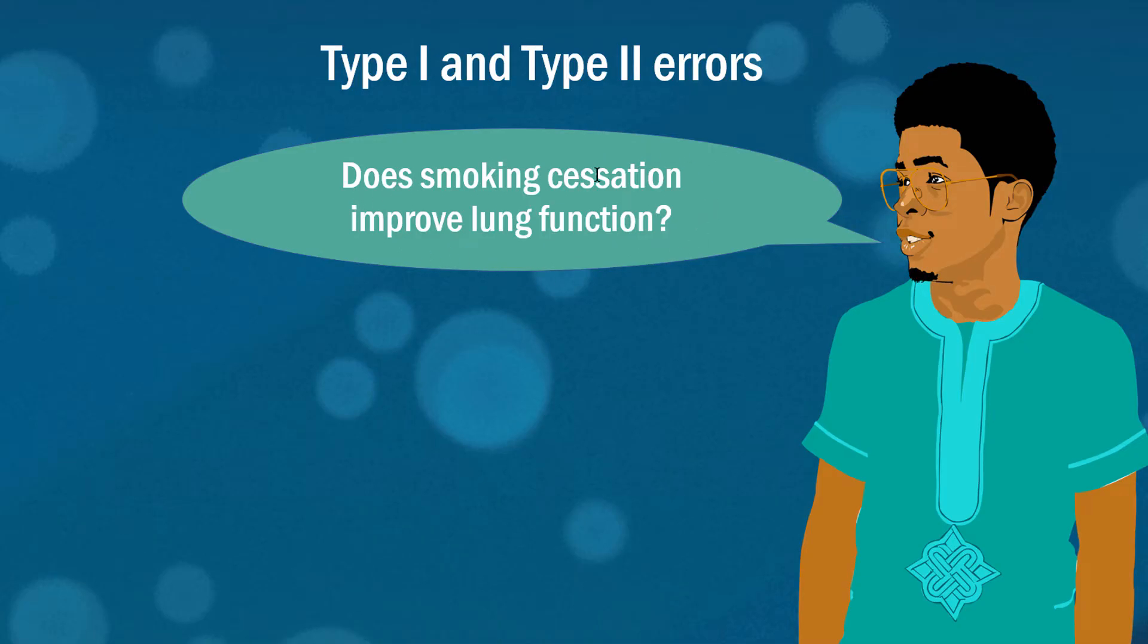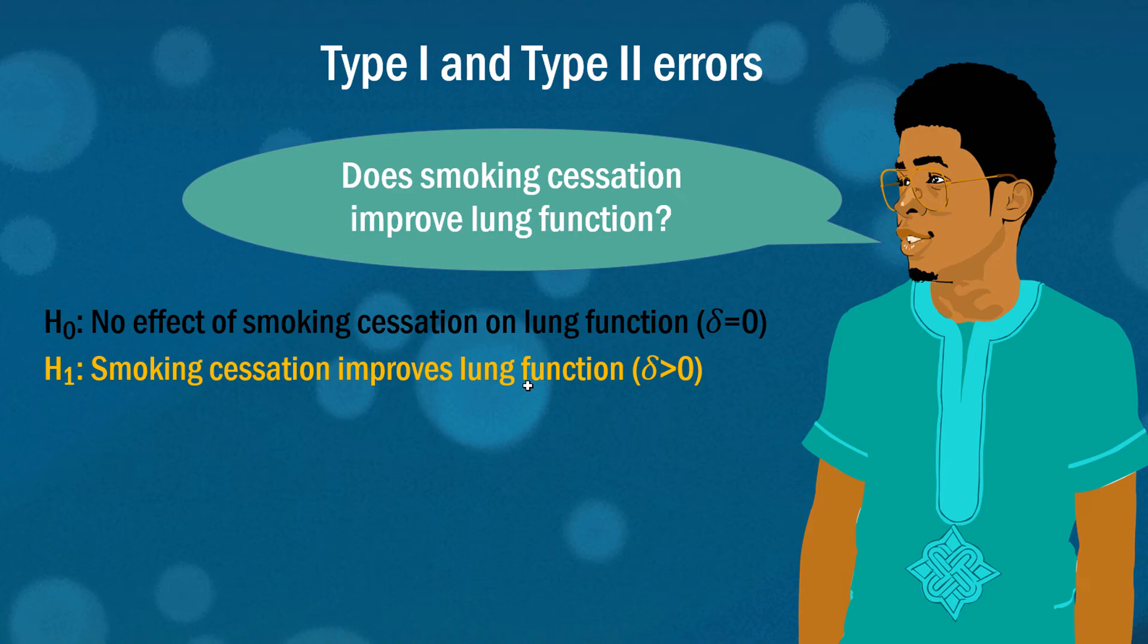In assessing whether smoking cessation or in other words whether stopping smoking improves your lung function we need to set up our null and alternate hypotheses. Because we're conservative we're going to go with the null hypothesis being that there is no effect of smoking cessation on lung function. Here I've just said that the difference is zero. That's what that curly Greek delta represents. The difference in lung function between those that stop smoking and those that continue smoking.